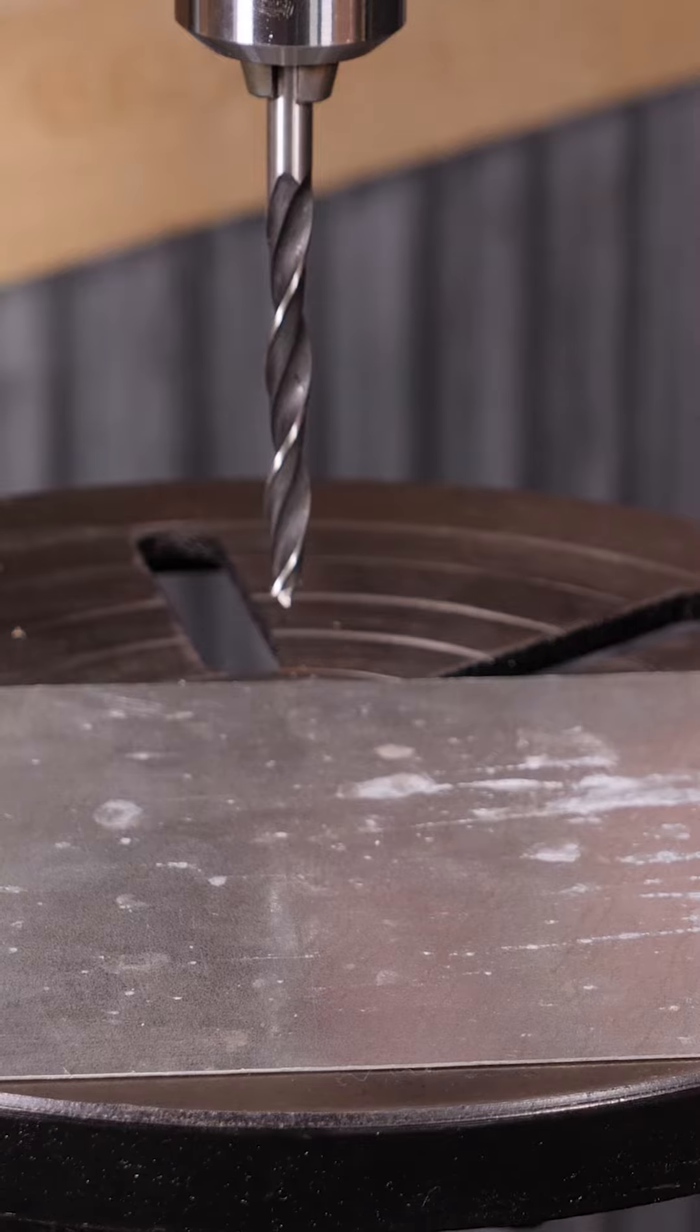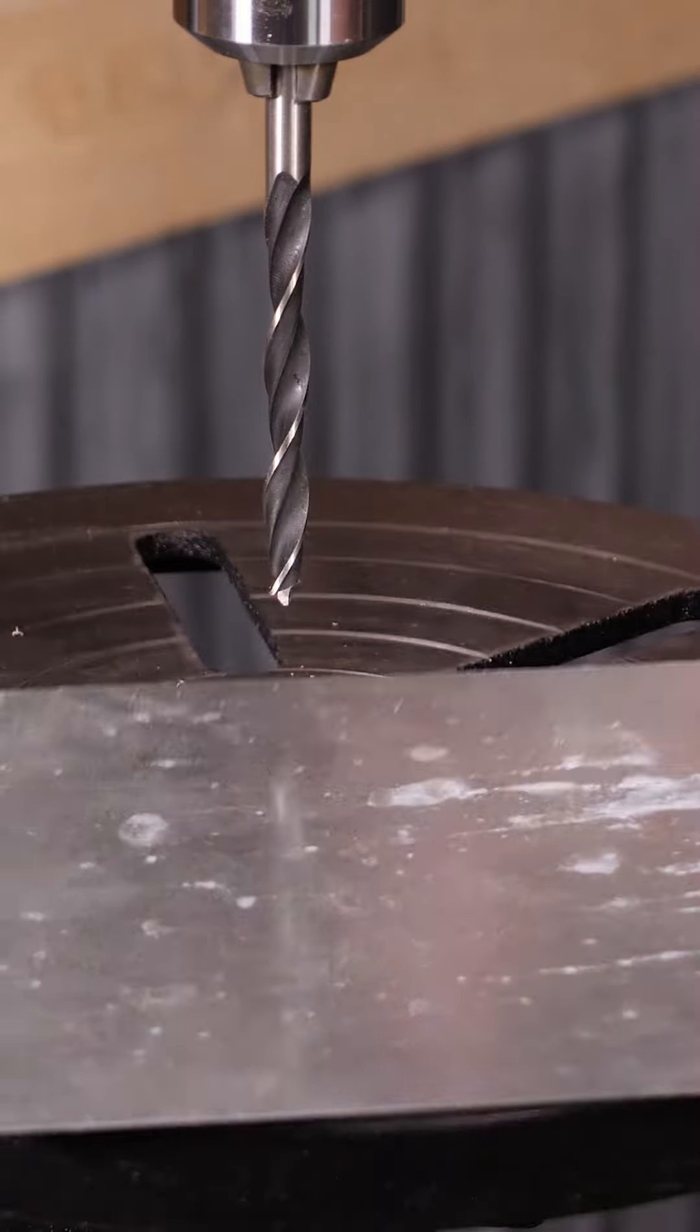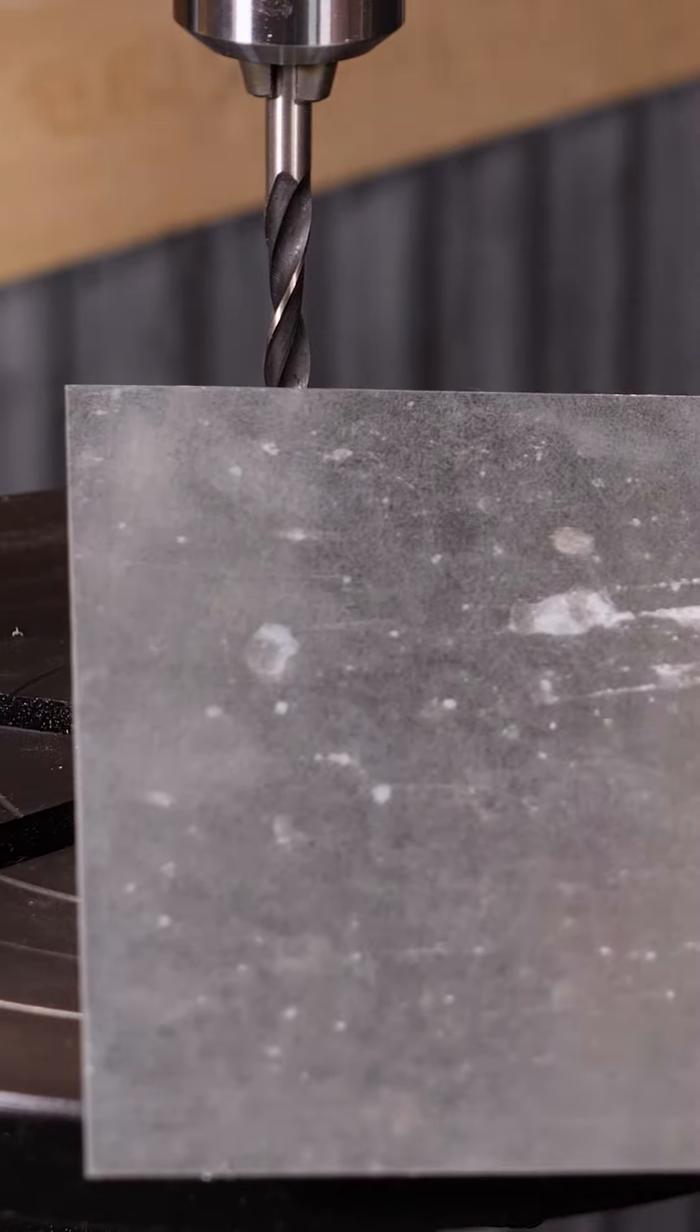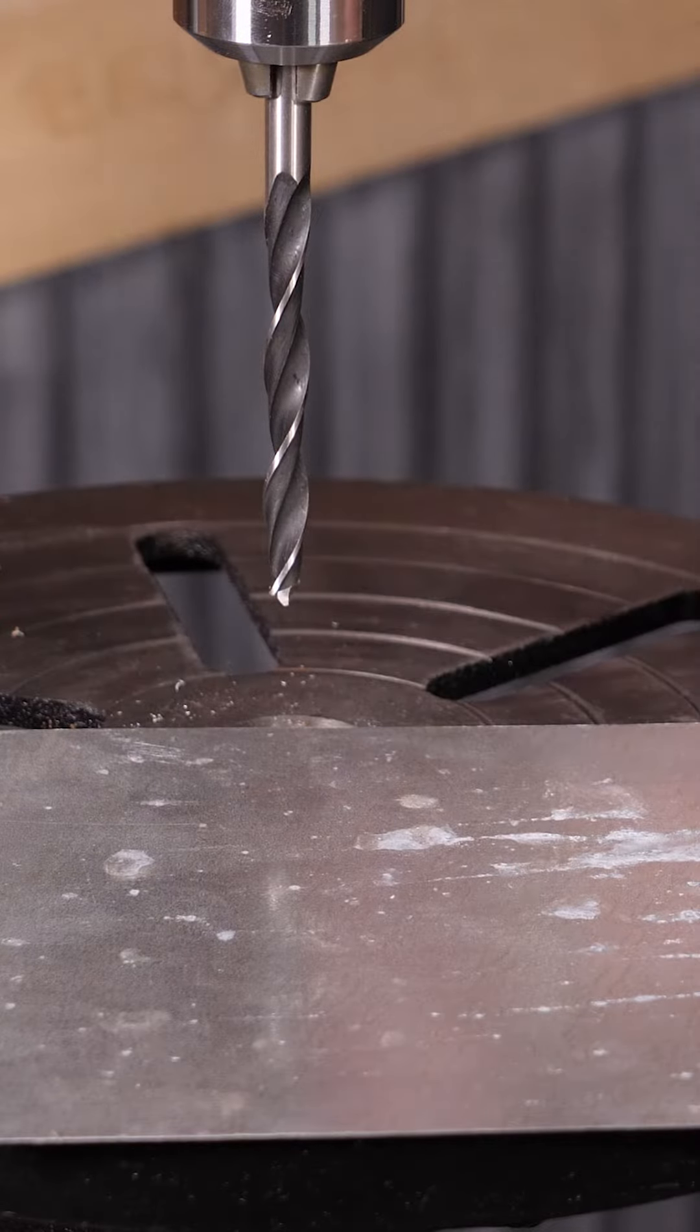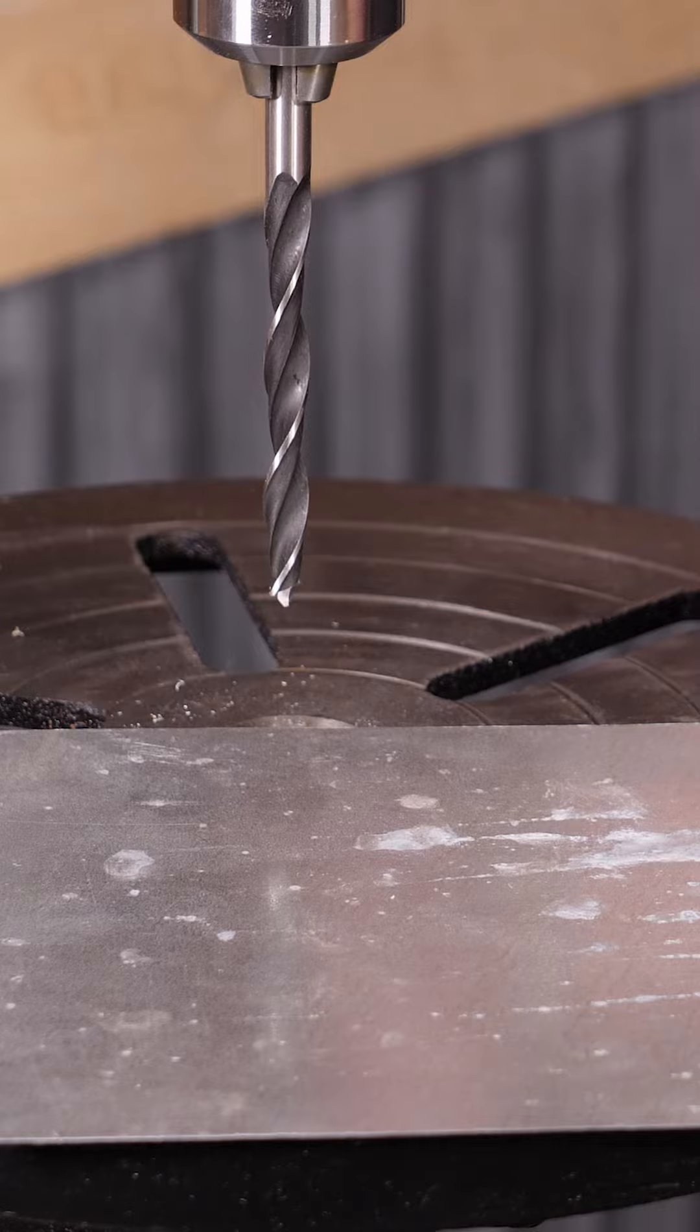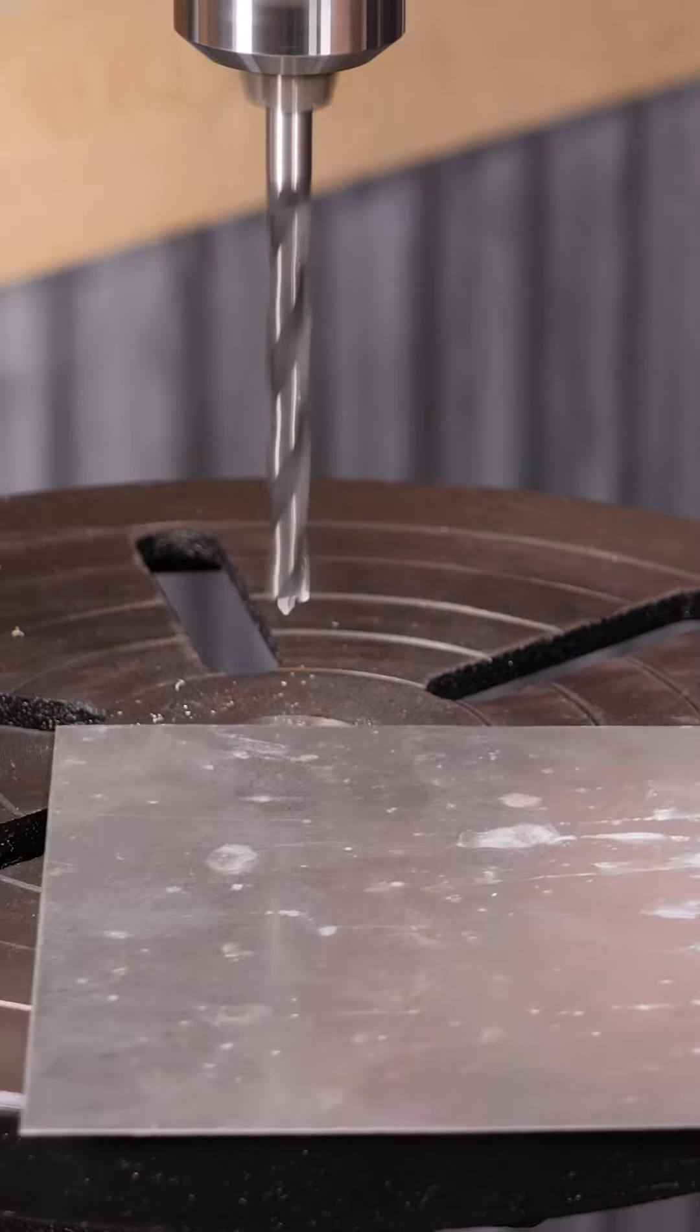So what we're going to look at now is a non-typical use for a Brad Point drill. One of the issues you often have with drilling through thinner sheet metal stock is that you have a really rough exit hole or burr on the backside and your hole isn't truly round.